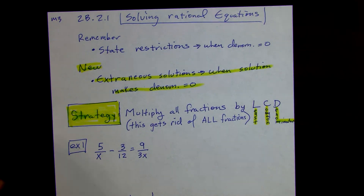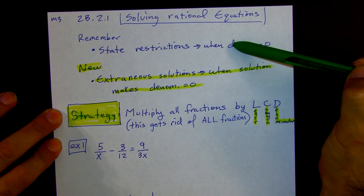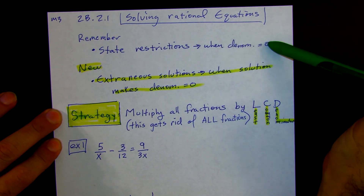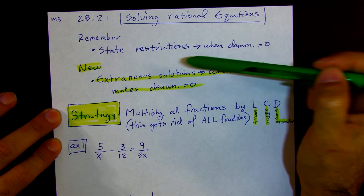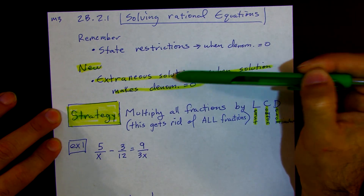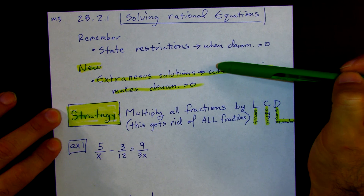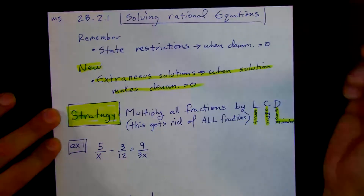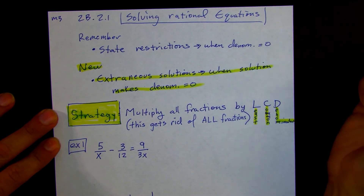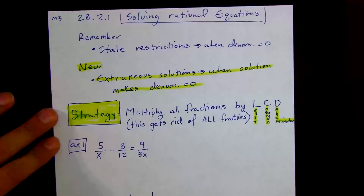So as I was saying, we always have to state our restrictions — that's when the denominator equals 0. Now the new bit of this is extraneous solutions. It's a solution that we'll get for our problems, and it's when the solution makes the denominator 0. So we have to watch out for that. It's still a solution, but we would mark it as an extraneous solution.